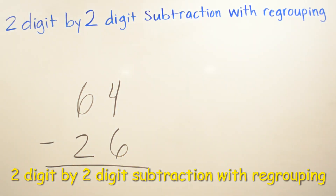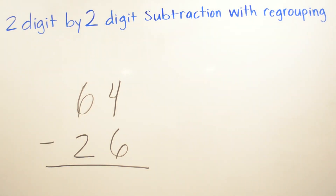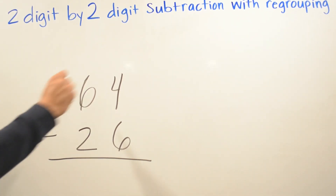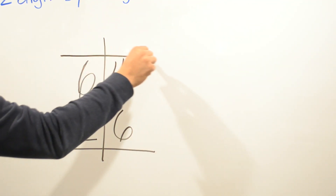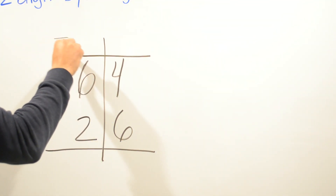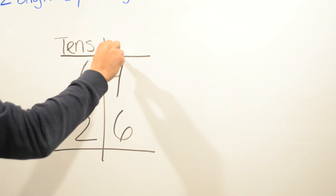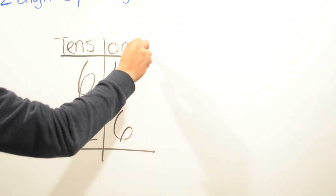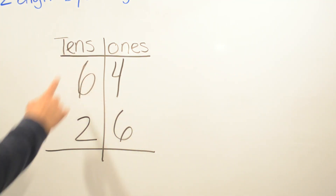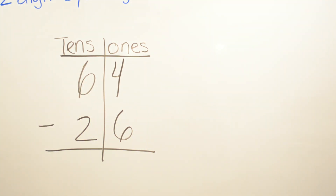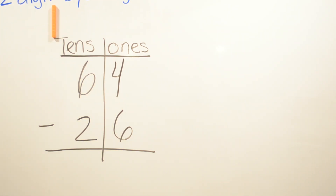Now we are working on two-digit by two-digit subtraction with regrouping. We have 64 minus 26. We draw a line in the middle and write our tens places and our ones places. We have six tens, so we're gonna put six tens.